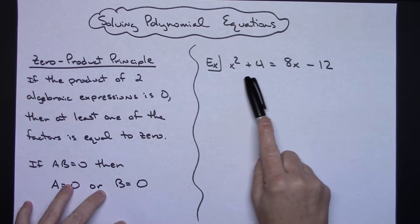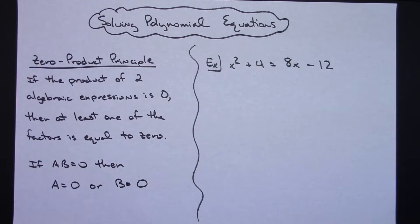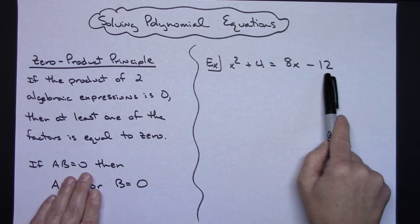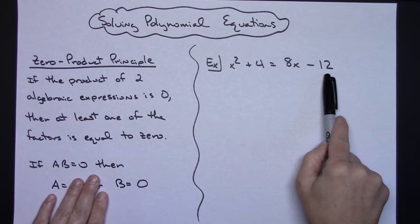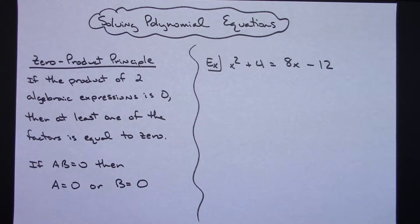Let's look at this first example right here. Let's suppose I've got x squared plus 4 equals 5x minus 12. To be able to implement this rule, I've got to get this equation set equal to zero. To do that, I've got to move those two terms to the left.